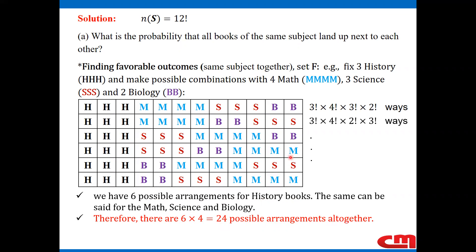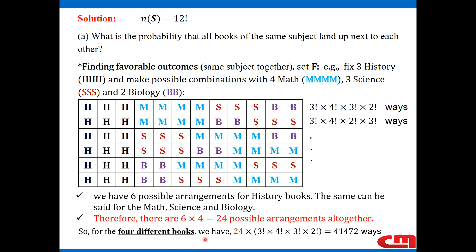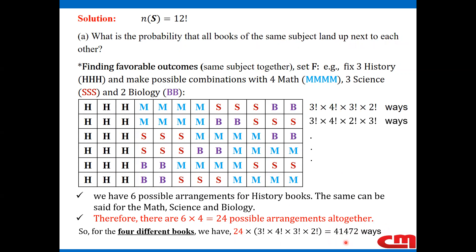So we have 24 possible arrangements of the subject groups, and for each arrangement the books within each subject are arranged in 3! × 4! × 3! × 2! ways. Applying the fundamental counting principle, the total number of favorable outcomes is 24 × 3! × 4! × 3! × 2!, which gives us the total number of ways to arrange the 12 books with all same-subject books together.